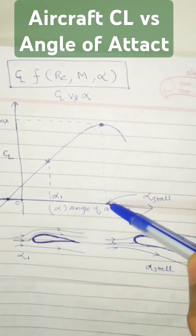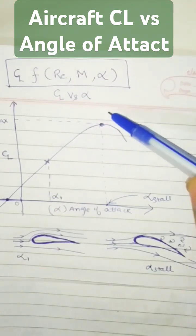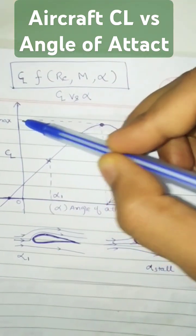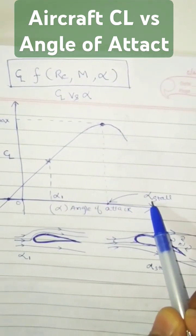So there is a particular angle of attack at which you have the maximum coefficient of lift, CLmax, and that angle of attack we call stalling angle of attack.